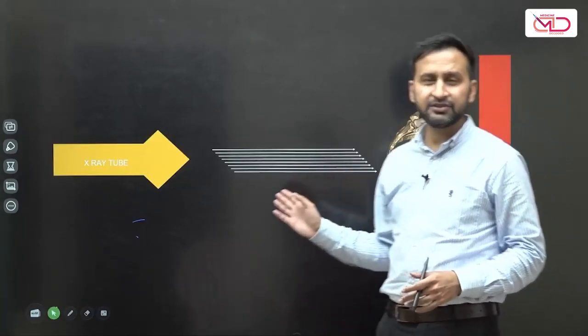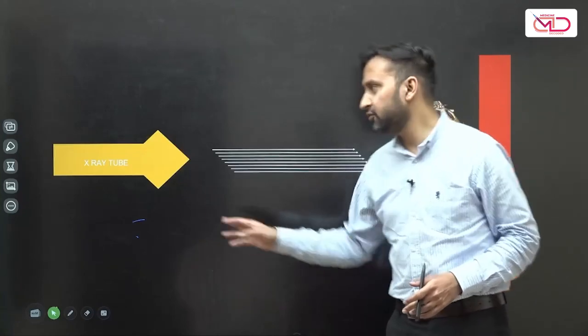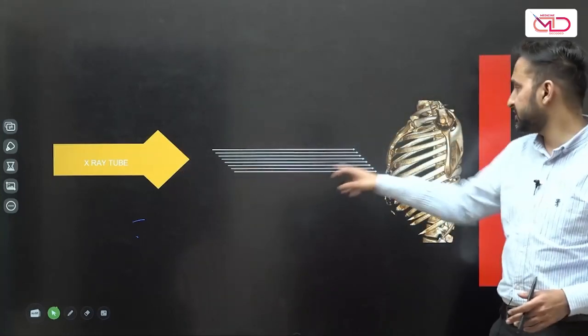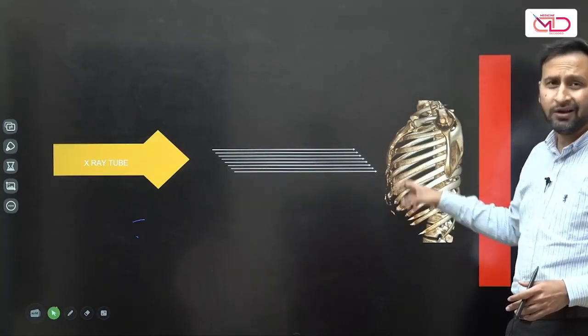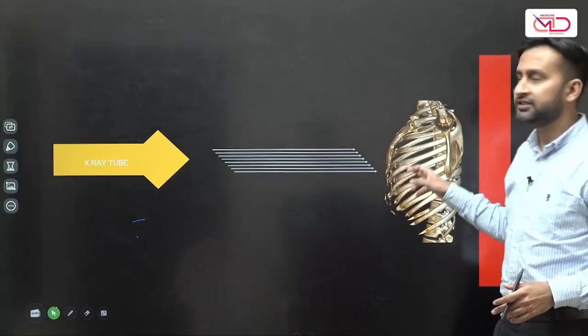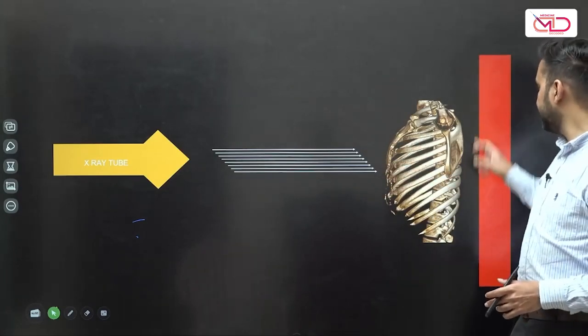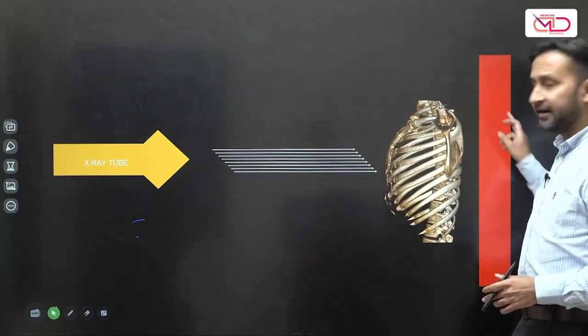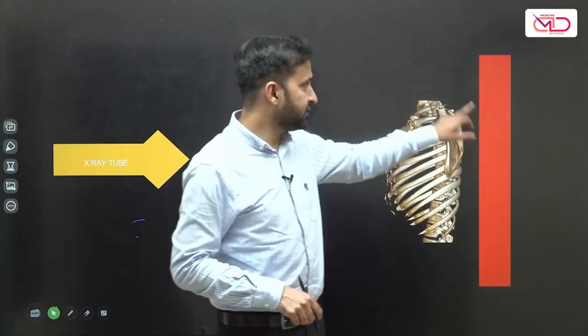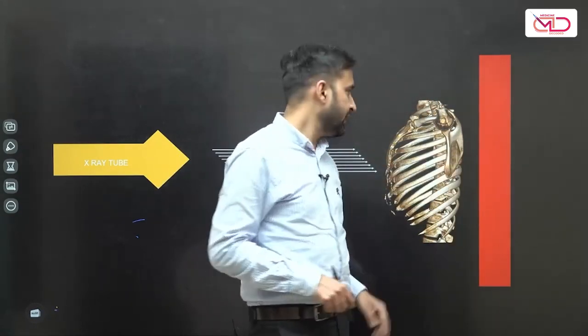This is a diagrammatic representation of an AP view in which the X-ray tube generates X-rays, passes through the anterior chest wall consisting of sternum and anterior ribs, and the X-ray plate — which acts as receiver — accepts the X-rays and forms the final image.